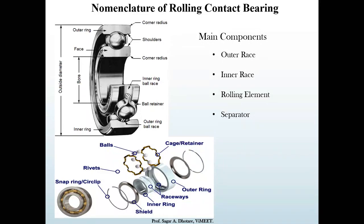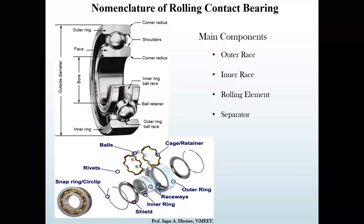In the assembled diagram of the rolling contact bearing, there is a circlip and a shield. The shield prevents any foreign particle from entering between the rolling elements where friction can occur. The inner ring, raceway, retainer or cage, rolling element (ball), and outer ring are all visible in this cross-section.